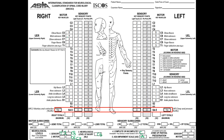Looking at the sensory level, what is the most caudal segment that has any kind of sensory function? On the right it is T2, so we write T2. On the left, we check what is the most caudal with any kind of function — there is some light touch at T5, so it is T5. For the motor zone of partial preservation, we check the most caudal segment with any type of motor function: on the right it's L4, and on the left it's L5.